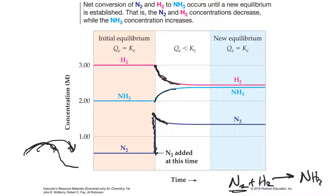I can go in both directions. Any changes marked in blue shift it to the left; anything marked in red shifts it to the right. Decrease means I've made a hole — if I made a hole, it's going to go to the left to fill the hole. So if I have less nitrogen, the whole equilibrium is going to shift to the left, and more ammonia is going to break apart into hydrogen and nitrogen. Same thing if I decrease the hydrogen — if I decrease hydrogen, I've made a hole, meaning ammonia is used up to fill that hole.